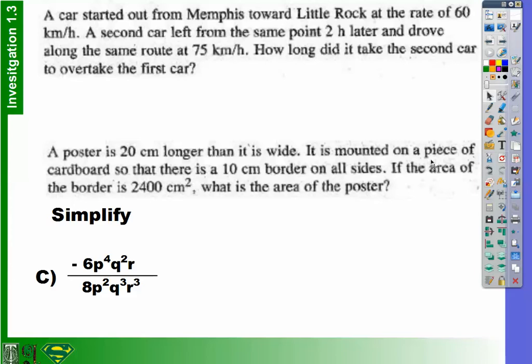And then a second car left from the same point and was going down the same route and was going 75 kilometers per hour. And we're trying to figure out how long it took for the second car to overtake the first car.